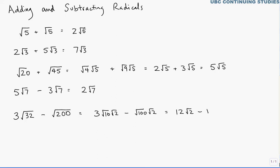And √100 is 10, so we're subtracting 10√2. So 12√2 - 10√2 is simply 2√2.